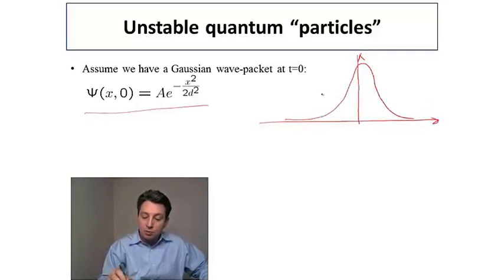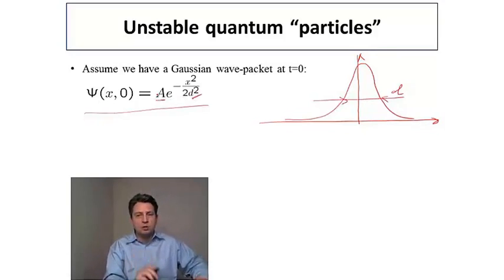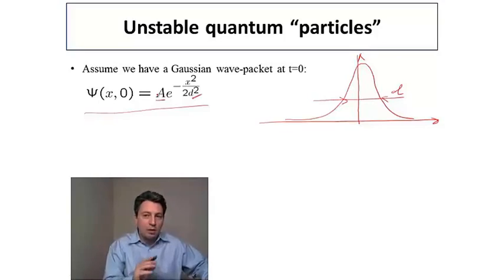Around 0, so it's a typical Gaussian, around 0, and the spread of this Gaussian is of order d, which is the parameter of the model. So A here is some coefficient, it's not very important at this stage. Now, the calculation which we are going to present is essentially the evolution of this initial condition with time under the action of the Schrodinger equation.